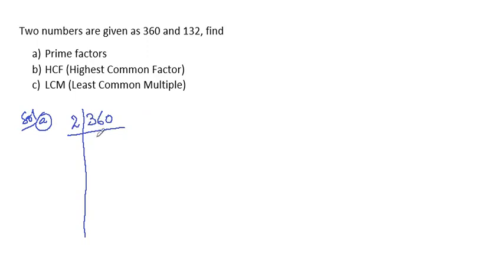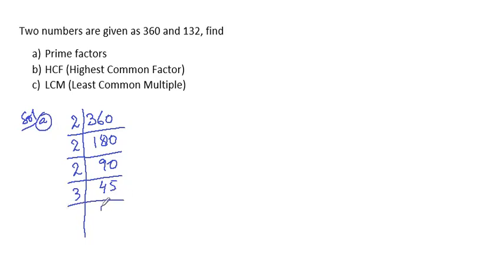2 is the least prime number. 360 divided by 2 gives 180. 180 can be divided by 2 to give 90. 90 can be divided by 2 to give 45. 45 can be divided by 3 to give 15. 15 can be divided by 3 to give 5. Finally, 5 is left.